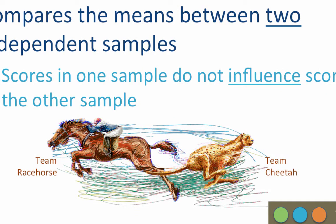So imagine that we are measuring the running speed of racehorses versus cheetahs. These groups are independent, because the speed of the racehorses does not influence the speed of the cheetahs.